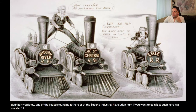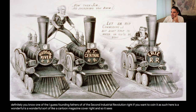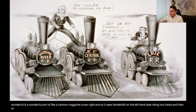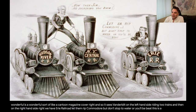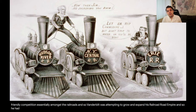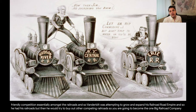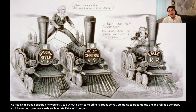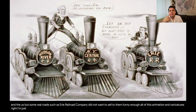Here's a wonderful cartoon magazine cover showing Vanderbilt on the left-hand side riding two trains, and on the right the Erie Railroad with the caption 'Let him rip, Commodore, but don't stop to water or you'll be beat.' This illustrates the friendly competition amongst the railroads. Vanderbilt was attempting to grow and expand his railroad empire by buying out other competing railroads to become the one big railroad company in the U.S. But some railroads, such as Erie Railroad Company, did not want to sell to him. This all reminds me of the Monopoly game — buying the railroads.